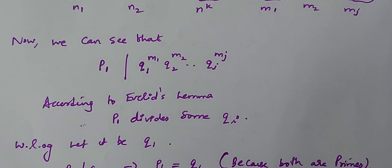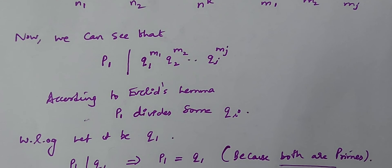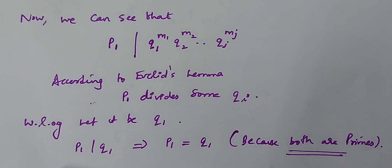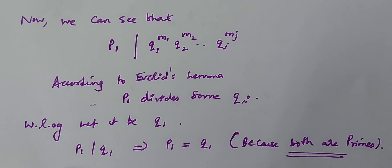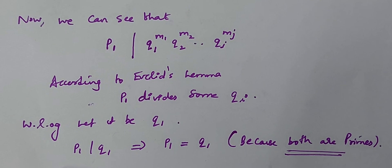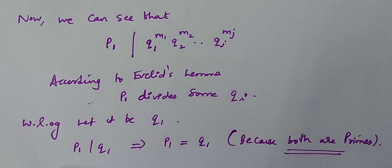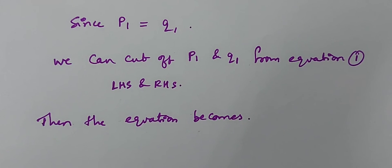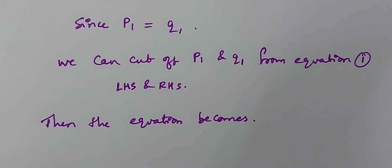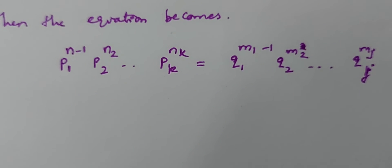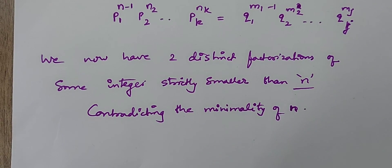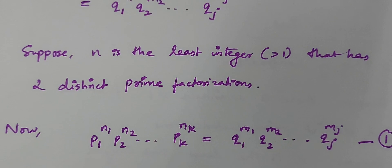Without loss of generality, let that qi be q1. So p1 divides q1. Since both p1 and q1 are primes, p1 cannot divide q1 unless they are equal. So p1 must equal q1. Since p1 equals q1, we can cancel p1 and q1 from both sides of the equation. After cancellation, we have two distinct prime factorizations of some integer strictly less than n, which contradicts the fact that n was the least integer with two distinct prime factorizations.